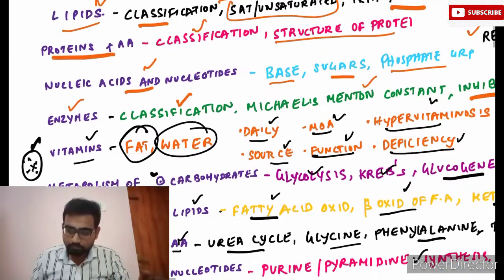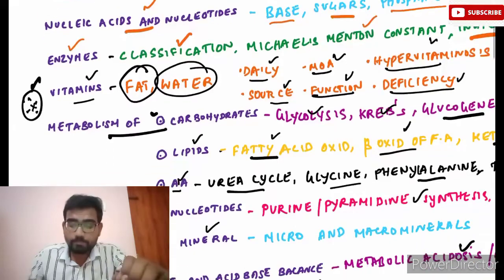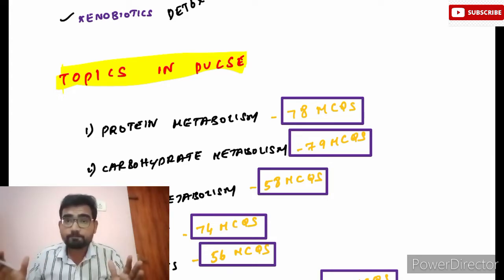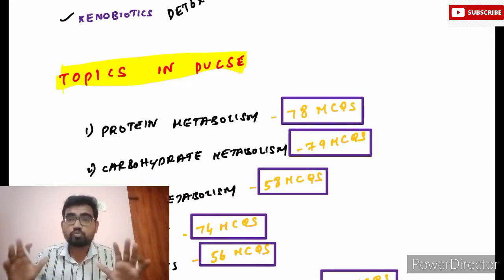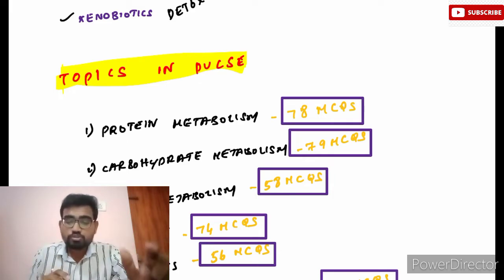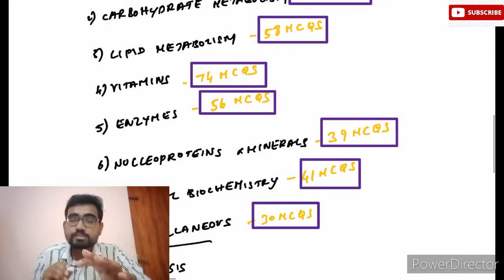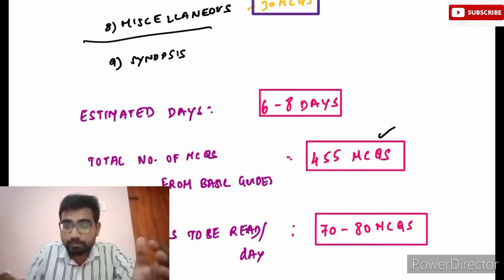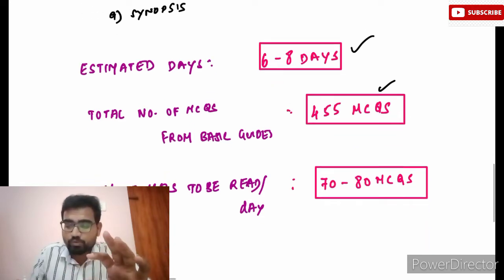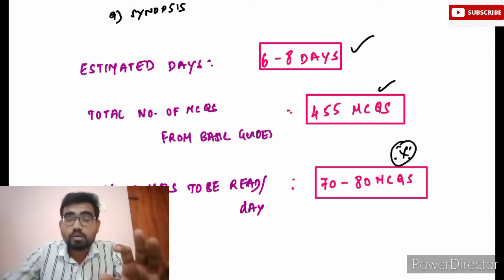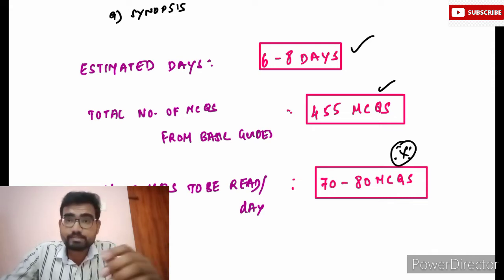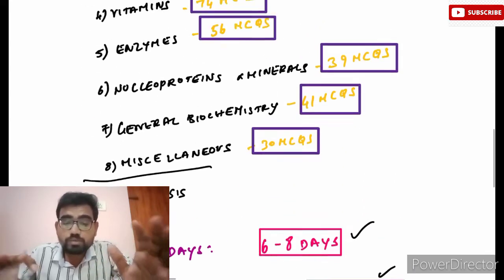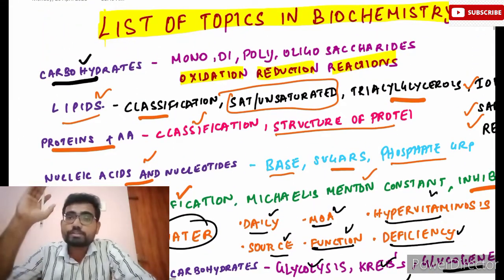Those are all the basic topics you need to cover from the textbooks. Once done, you go to the Pulse — our timetable is framed so that you read both the Pulse and the textbook on the same day for broad coverage. In the Pulse there are around eight topics, leaving aside the synopsis, with approximately 455 MCQs. In my timetable I've given around six to eight days for biochemistry, so 70 to 80 MCQs per day is more than enough. You should also read previous MCQs alongside these textbook topics.